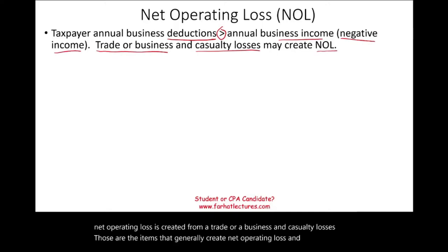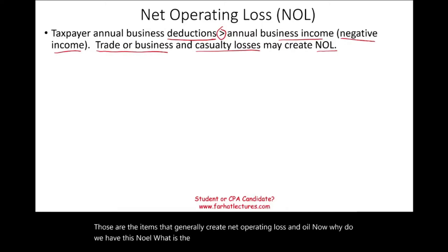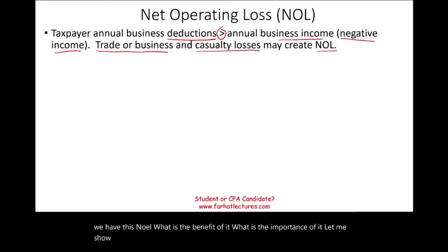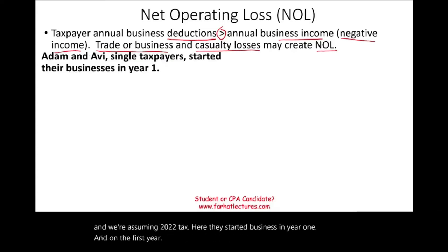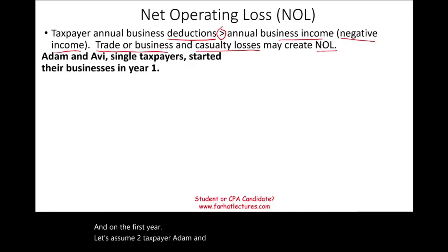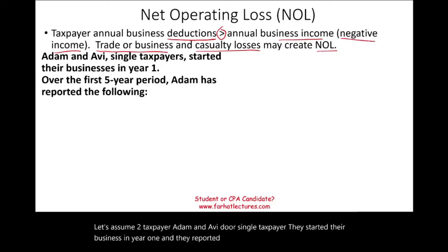Now, why do we have this NOL? What is the benefit of it? Let me show you an example with two taxpayers to illustrate why Congress has this rule. Let's assume two taxpayers, Adam and Avi, both single taxpayers who started their business in year one, and they reported the following income.